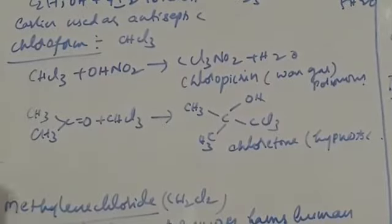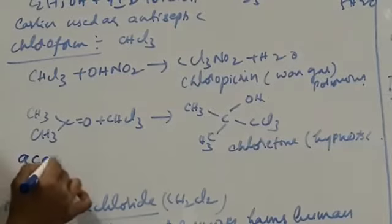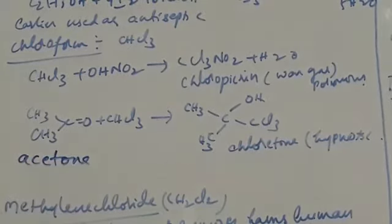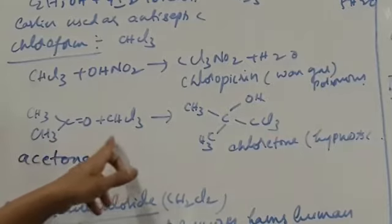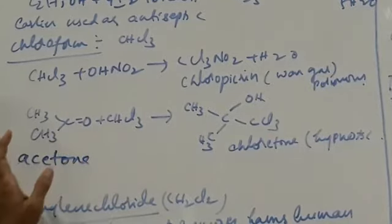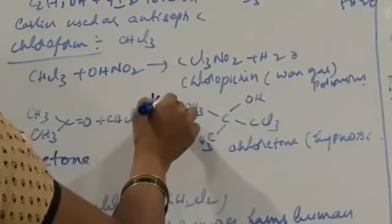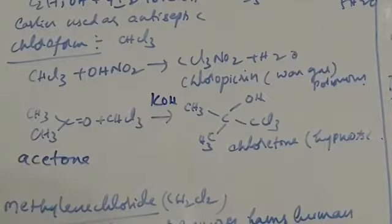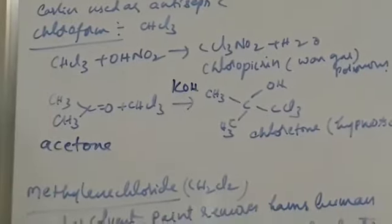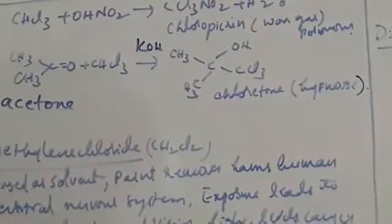Another use of chloroform: when chloroform is treated with acetone, it undergoes a condensation reaction in the presence of potassium hydroxide (KOH). From this condensation reaction, we get chloretone. Chloretone is a hypnotic medicine, used as a hypnotic agent.